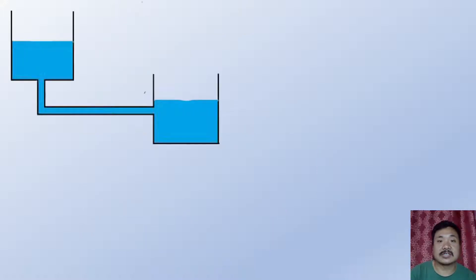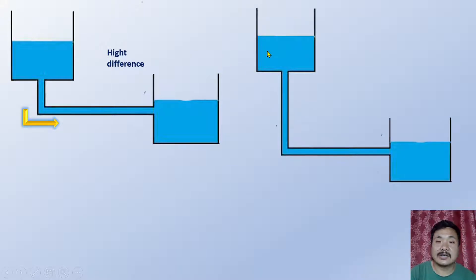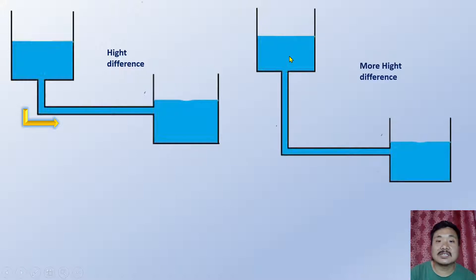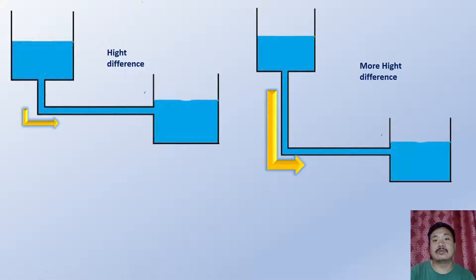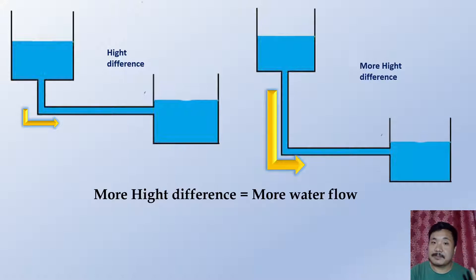Consider the water tank example: where the height difference is more, more water will flow; where the height difference is less, less water flows. So more is the height difference, more is the water flow. We will discuss this concept with Ohm's law.